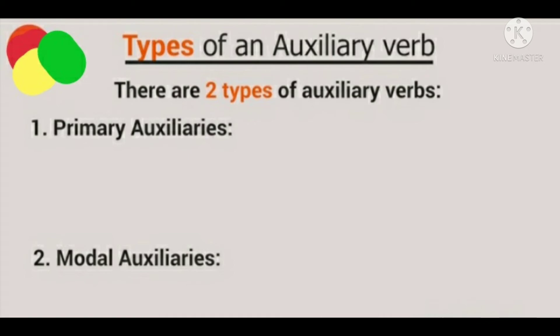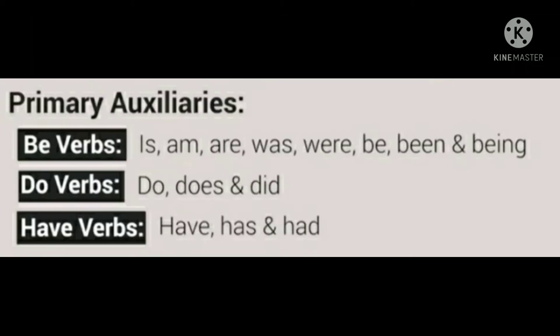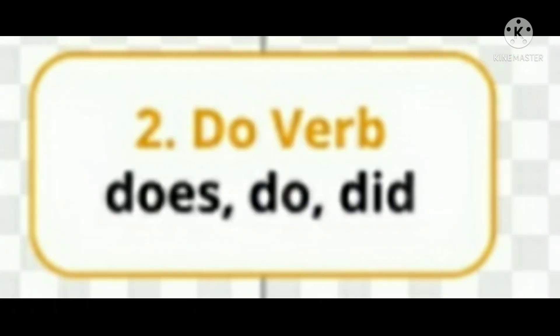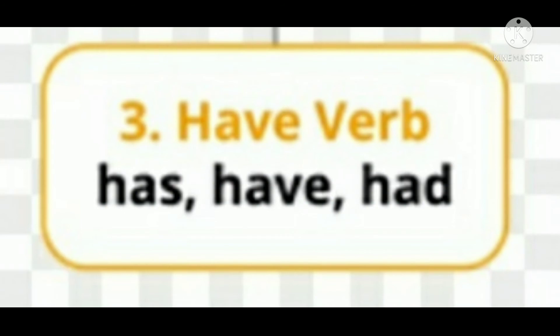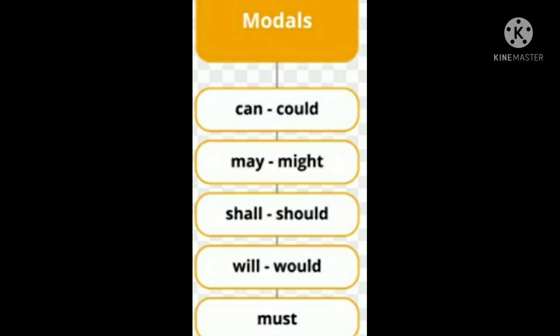Now I will tell you the types of auxiliary verbs. There are basically two types. Number one: primary auxiliaries. Number two: modal auxiliaries. Primary auxiliaries include the be verb, do verb, and have verb. The be verb includes: is, am, was, were, be, been, being. The do verb includes: do, does, did. The have verb includes: have, has, had. Modal auxiliaries include: can, could, shall, should, will, would, may, might, used to, ought to, need to, and dare.